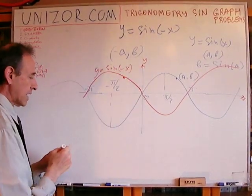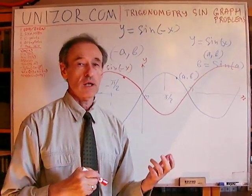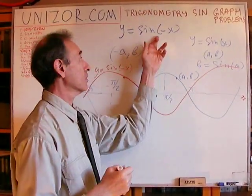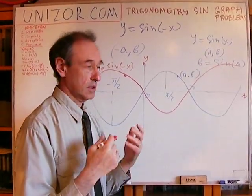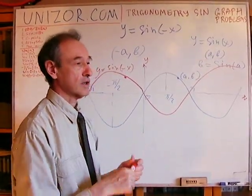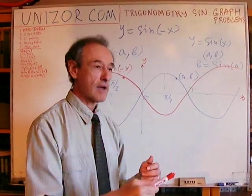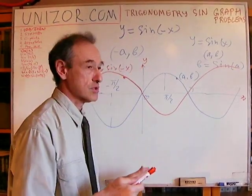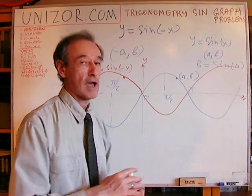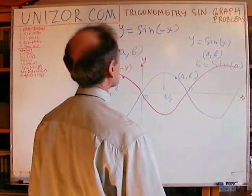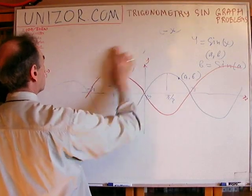Whenever you change the sign of the argument, that's true not only for this function but for any function. If you have y = f(-x), the graph is symmetrical relative to the y-axis compared to the graph of y = f(x). That's problem number one.